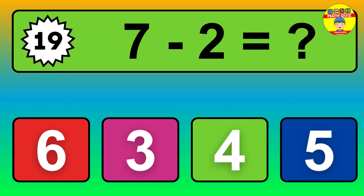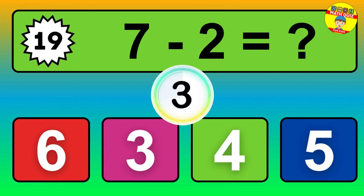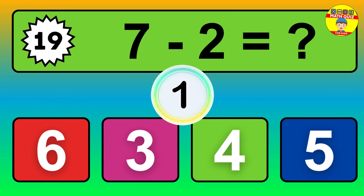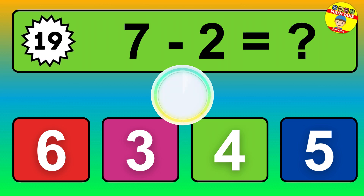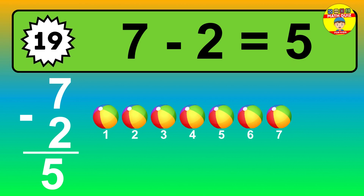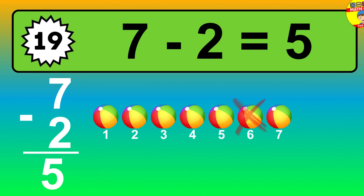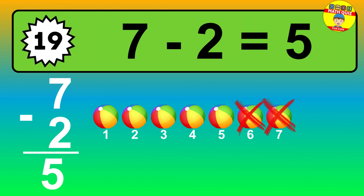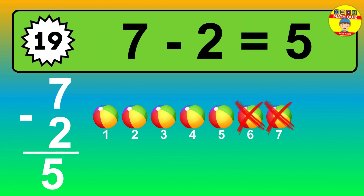Question 19. 7 minus 2 equals what? The answer is 7 minus 2 is 5. Let's count it. 1, 2, 3, 4, 5.